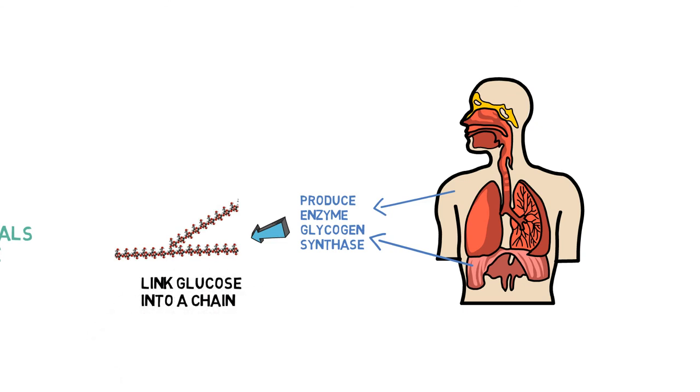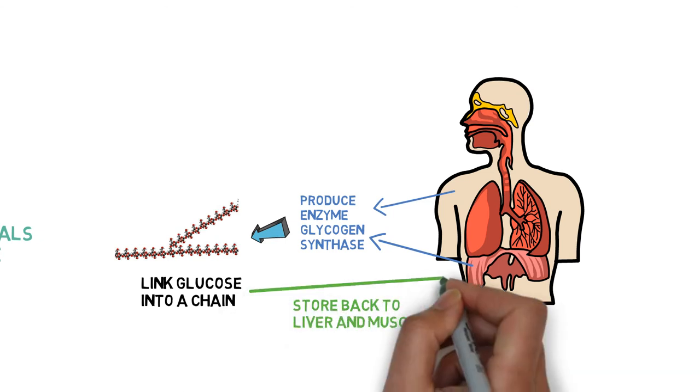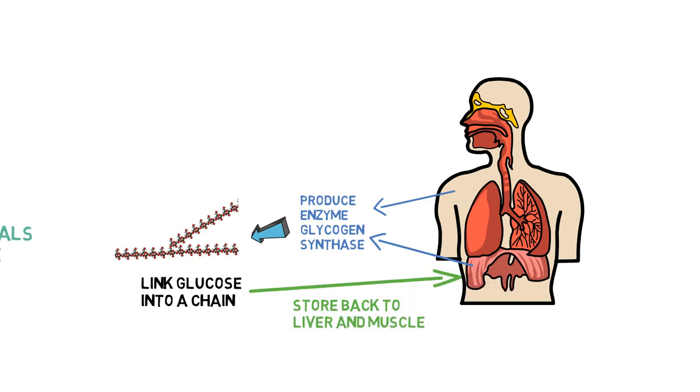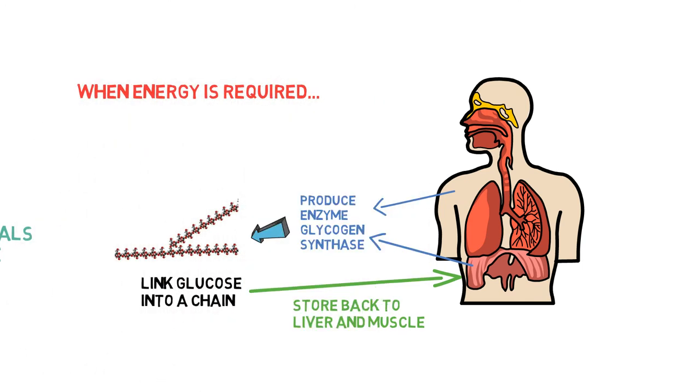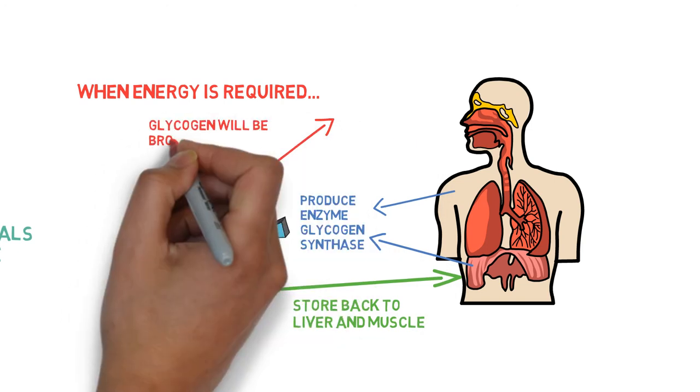The glycogen molecules can be stored in the liver and muscles. When energy is required by the body and we cannot take adequate energy from food, glycogen is broken down to glucose again and released into the bloodstream.